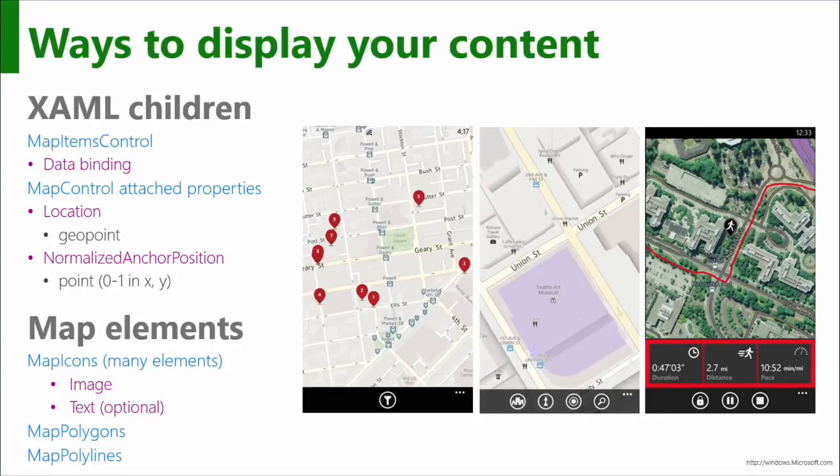The normalized anchor position is: you take the area of your map item control and you have an axis of 0 to 1 along the X and 0 to 1 along the Y. What you're saying is where exactly in that 1-by-1 grid is the long position. So it depends which way your icon is pointing. If it's pointing down, you need it to be 0 on the Y axis and 0.5 on the X.